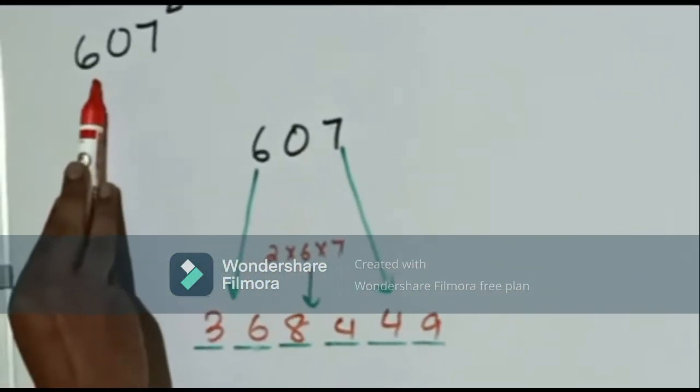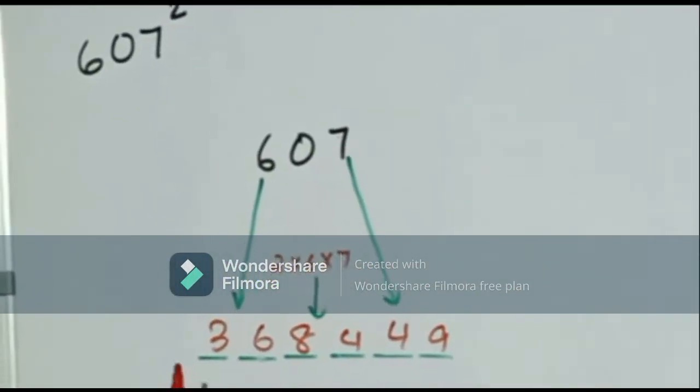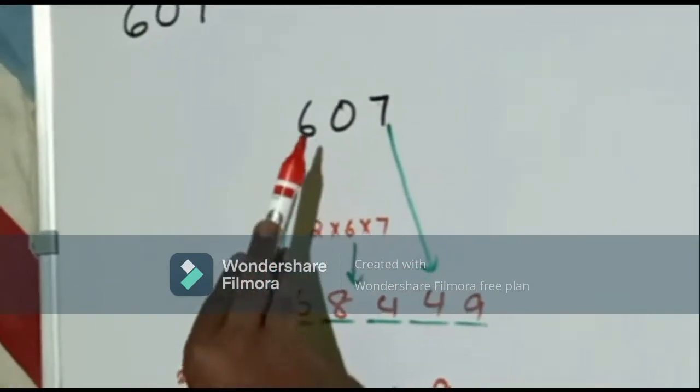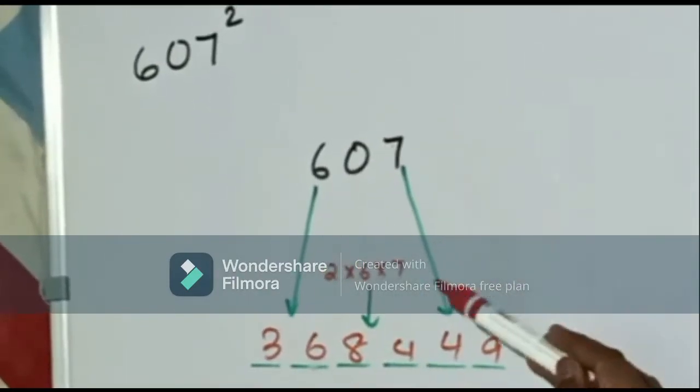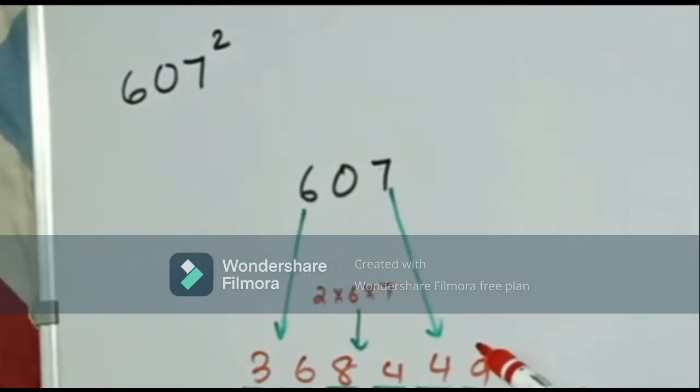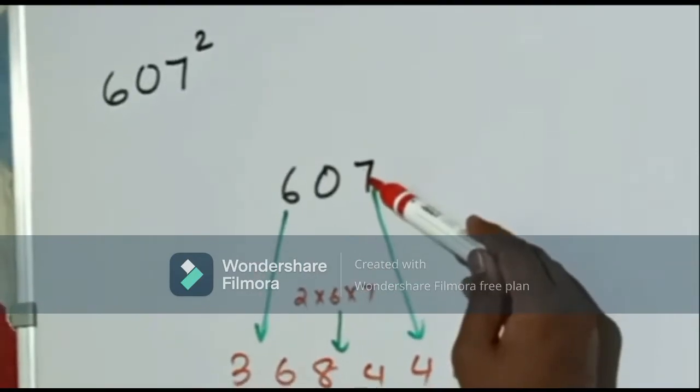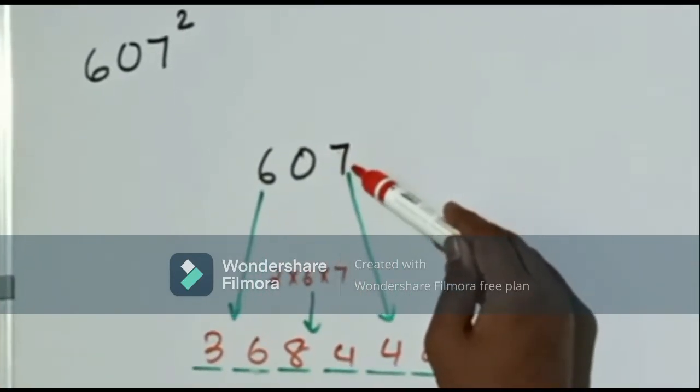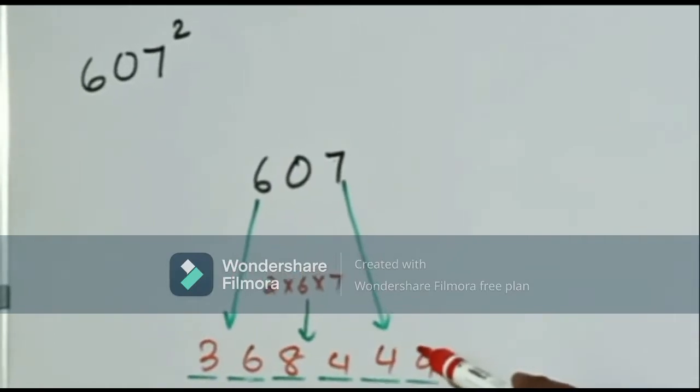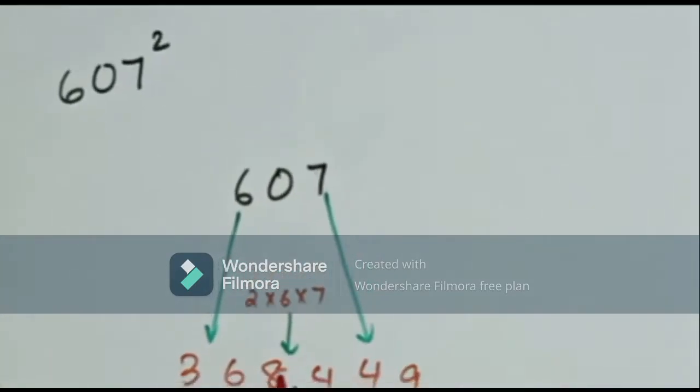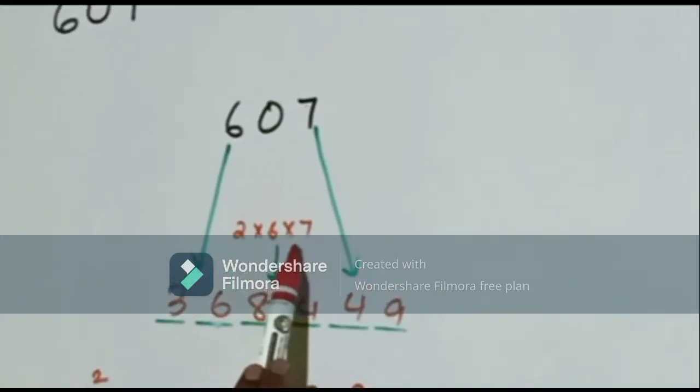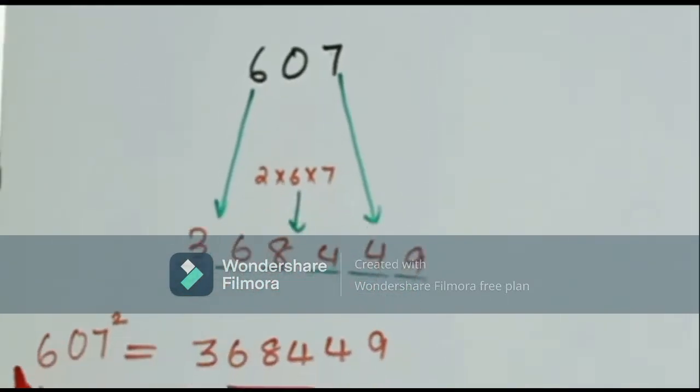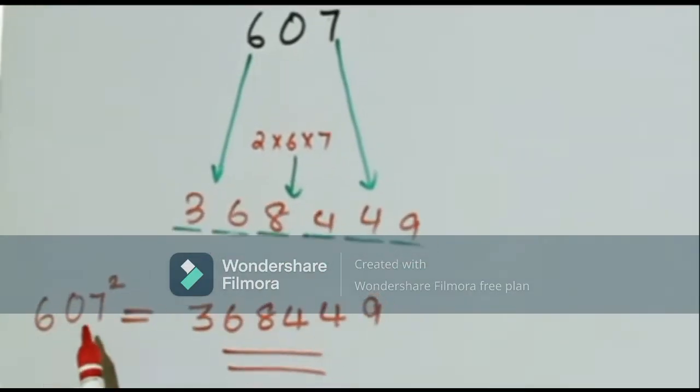Another example is the square of 607. The first two digits will be square of the first digit which is 6 and its square is 36. The last two digits of the answer will be the square of 7 which is 49. Now the middle two digits will be twice the product of the first and last term which will be 2 times 6 times 7 which is 84. Now we get the square of 607 is equal to 368449.